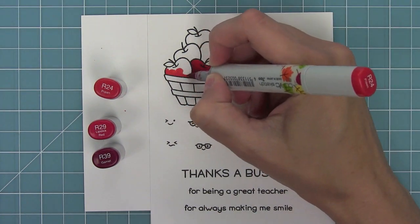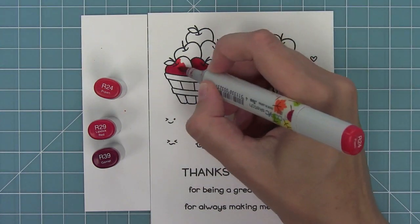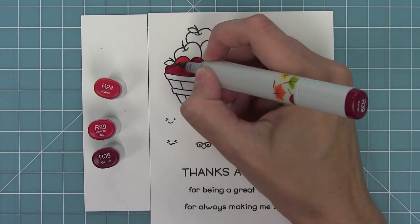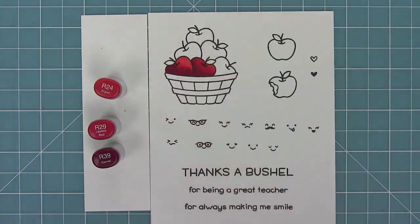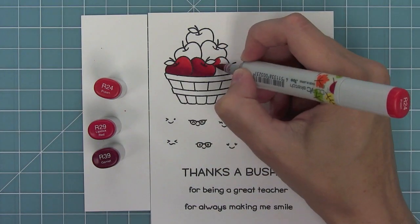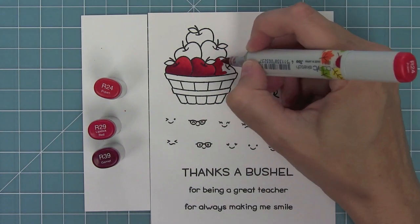So the first thing I'm going to do is lay down my lightest color, add my medium, and then blend that out with my lightest color. I'm going to add my darkest around the edges, go to my medium and then to my light again, and that's how I'm going to be coloring all of these apples.